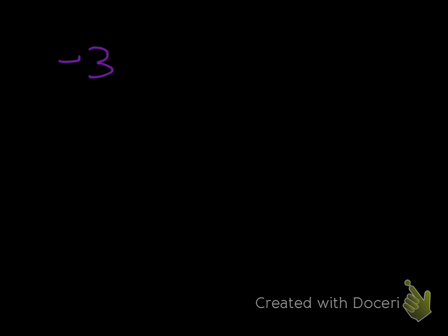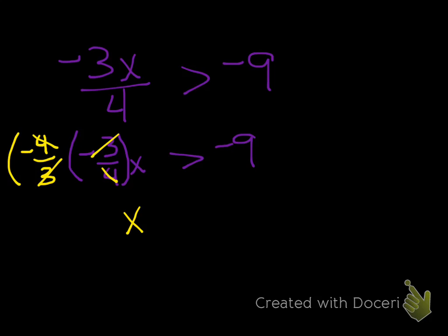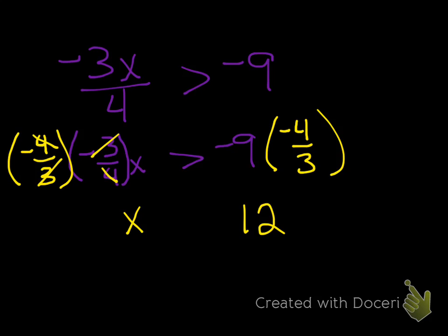Next one: negative 3x divided by 4 is greater than negative 9. This is the same as negative 3/4 times x is greater than negative 9. We want to get rid of this fraction, so we multiply by its reciprocal, which is negative 4/3 — the 4's cancel and the 3's cancel, leaving x. On the right side, multiply by negative 4/3 as well and we get 12. Did we multiply by a negative number? Yes, so we are going to flip the sign to the opposite direction.